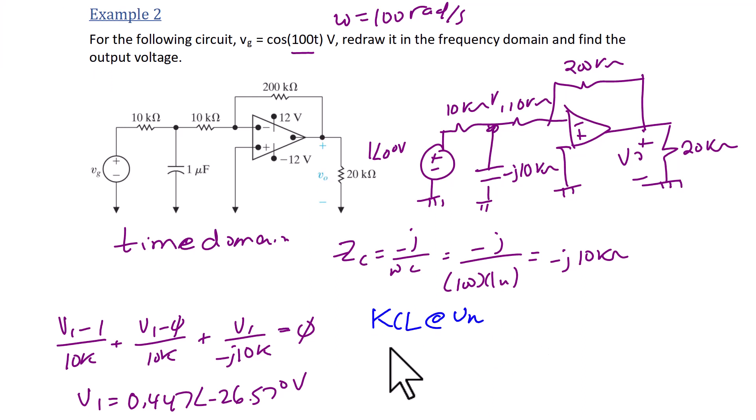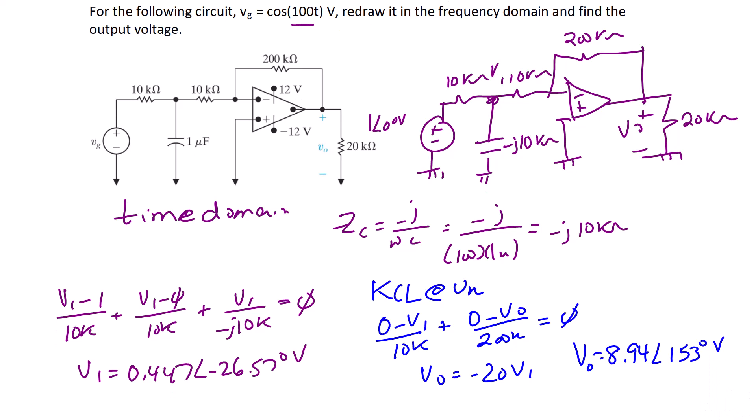So now we're going to do KCL at V negative, 0 minus V1 over 10k, plus 0 minus V0 over 200k, which equals 0. So V0 is equal to negative 20V1, or 8.94 with an angle of 153 degrees.